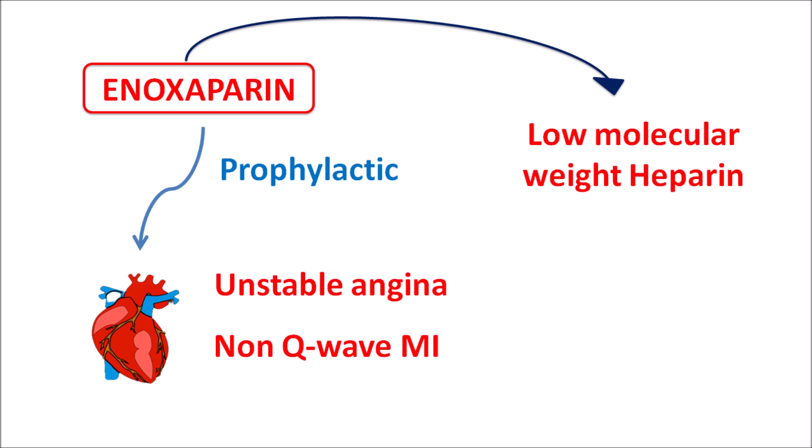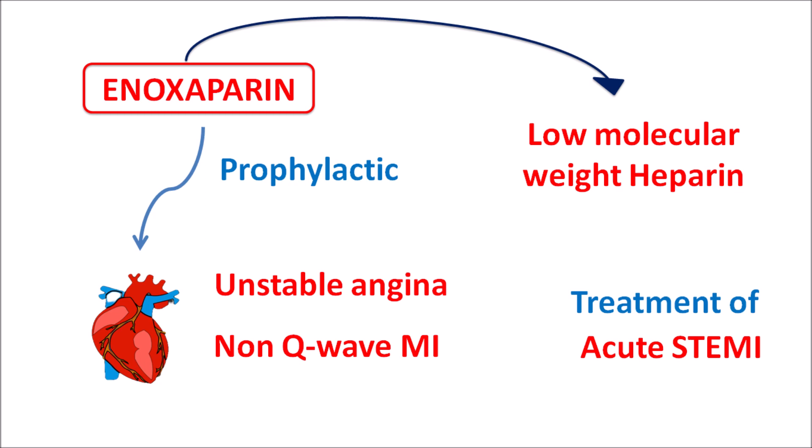Both unstable angina and non-Q-wave MI are associated with elevated risk of thromboembolism, so enoxaparin can be given prophylactically in these conditions. This drug is also indicated for the treatment of acute STEMI — ST-segment elevation myocardial infarction — where enoxaparin can reduce the risk of clotting along with other anticoagulant drugs.